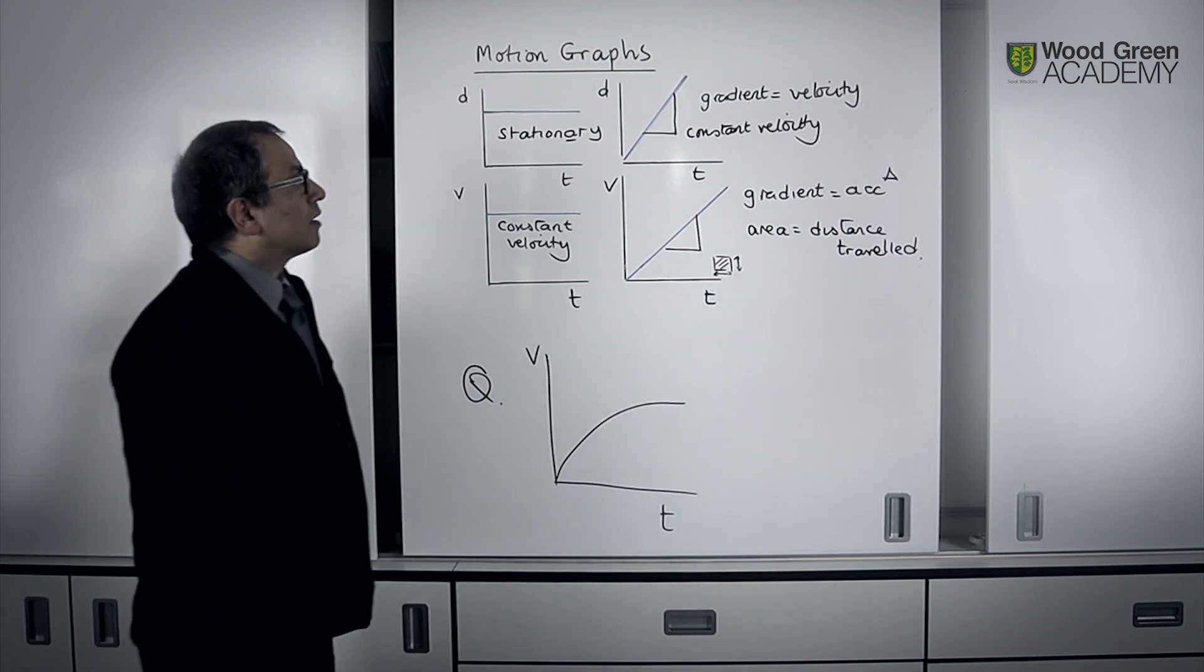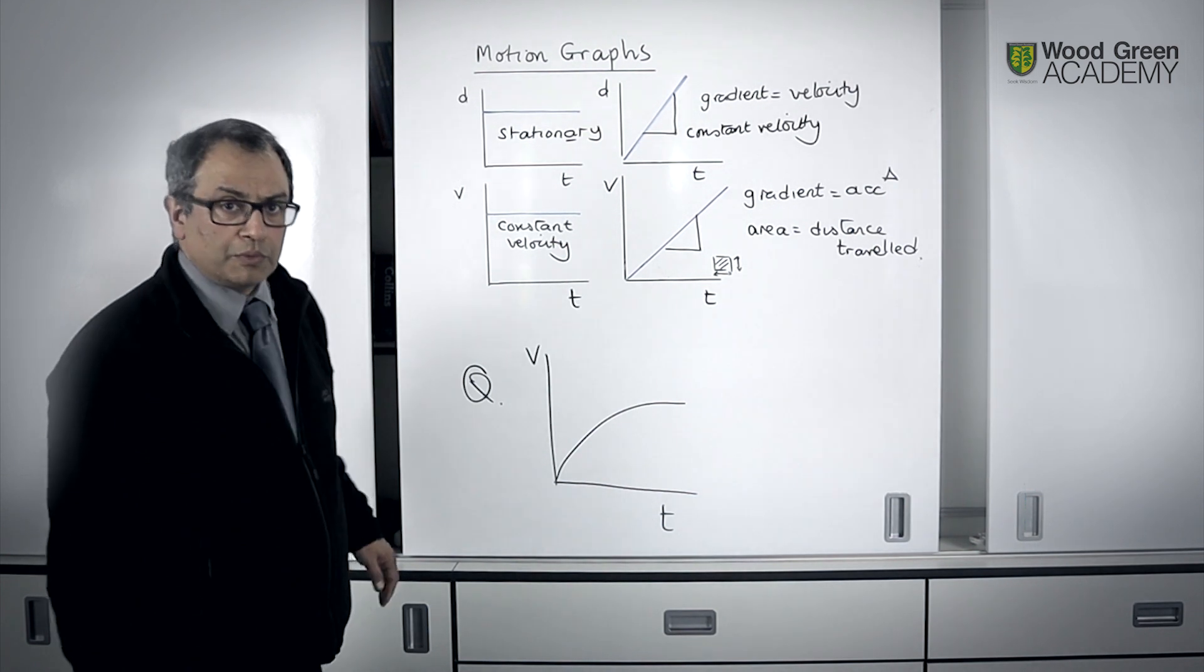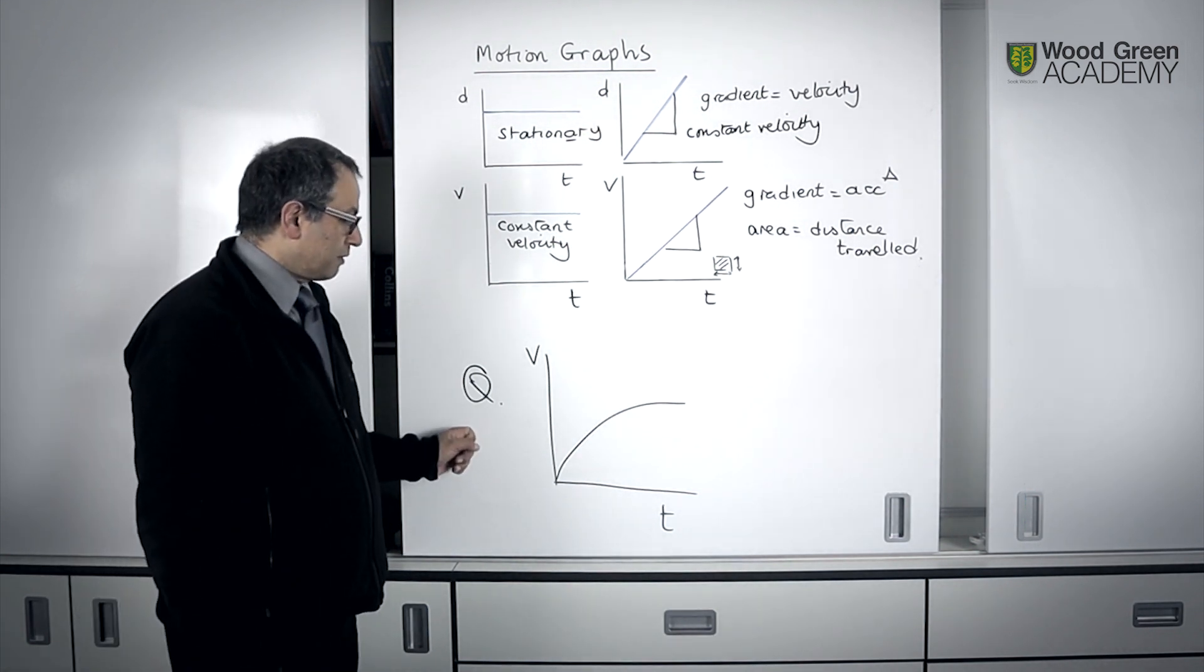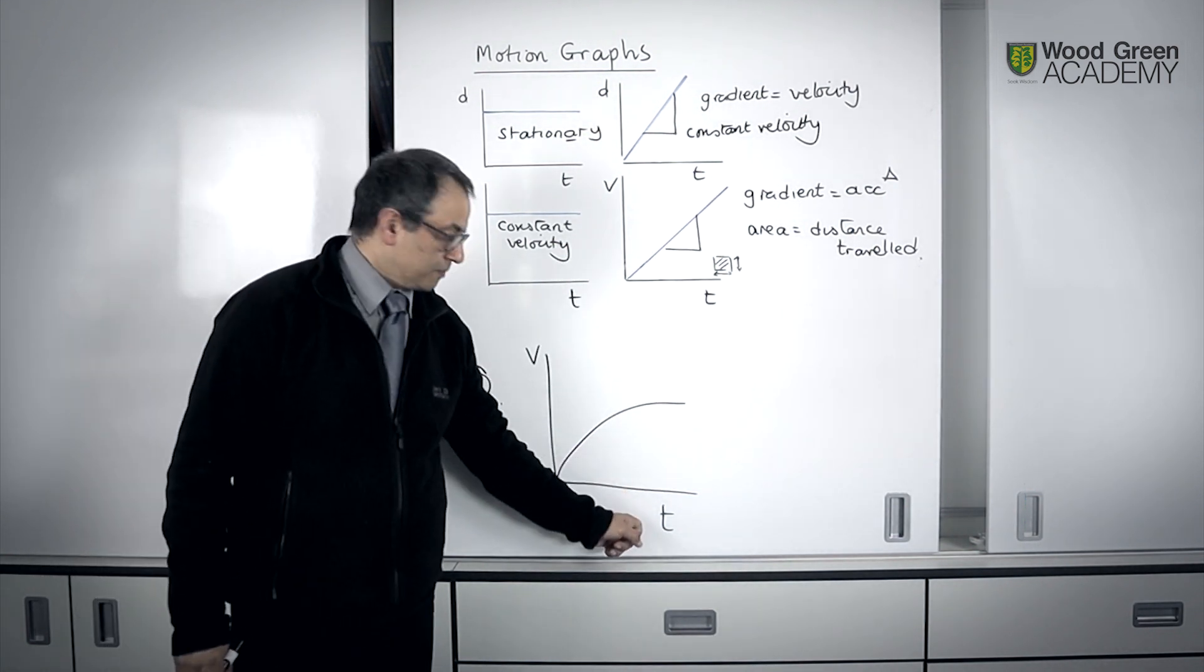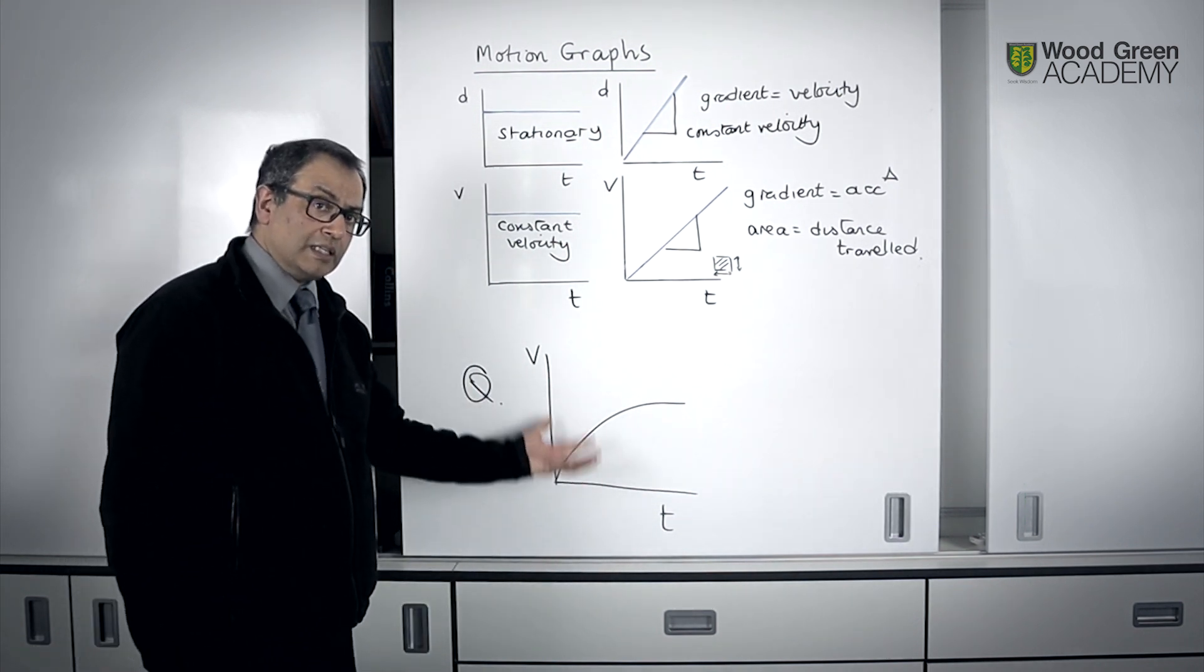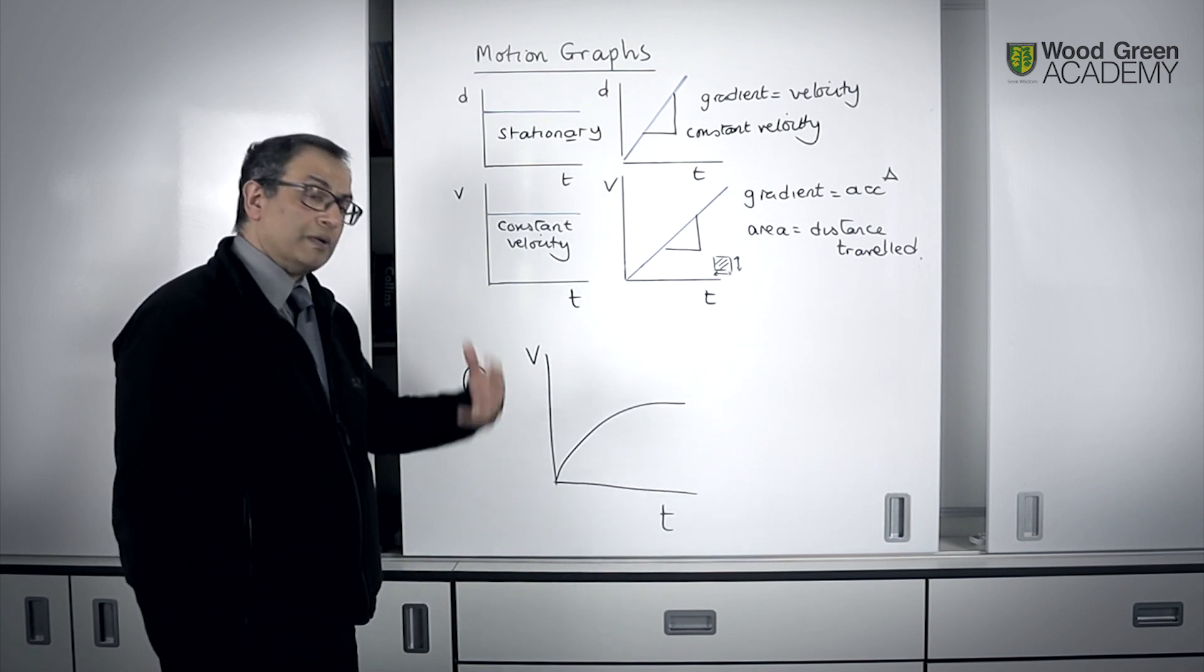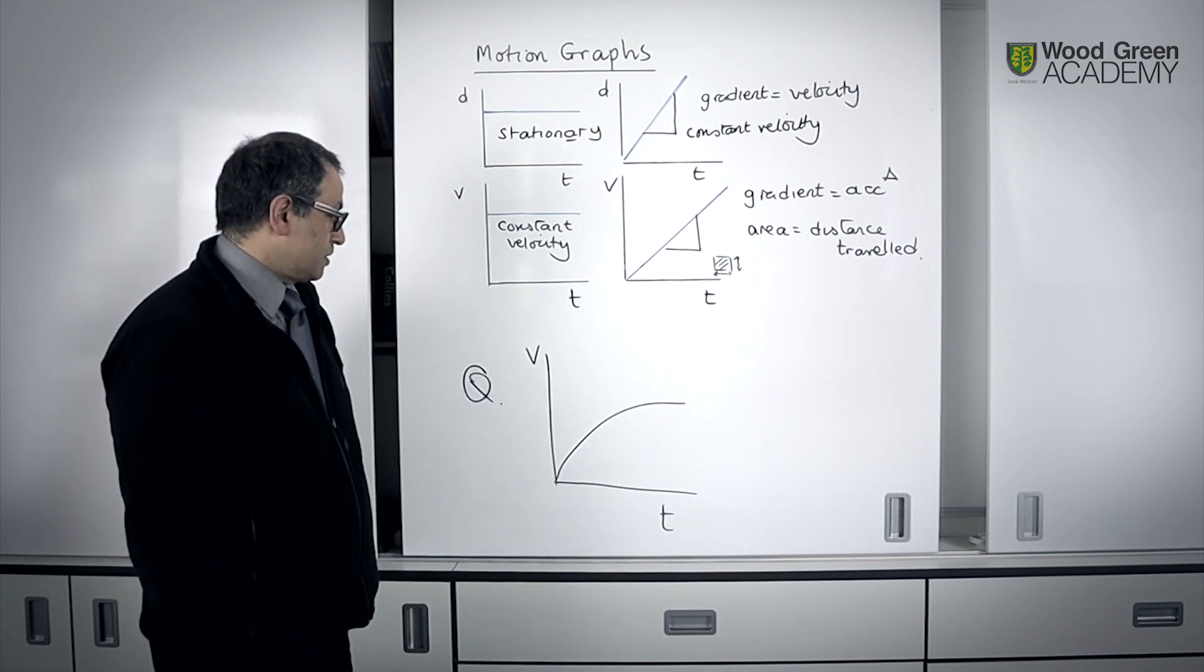So, as in all the previous Physics Made Easy series, we leave you with a challenging question. I've given you a graph, a velocity-time graph. You may ask yourself, what's happening to the motion of the object in this case, and you may want to even think about the context in which you may find this particular graph.